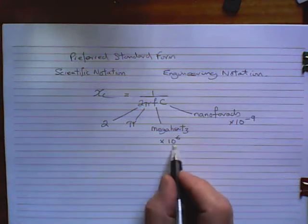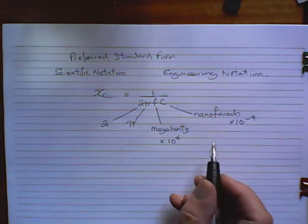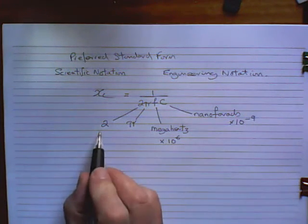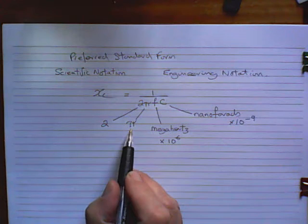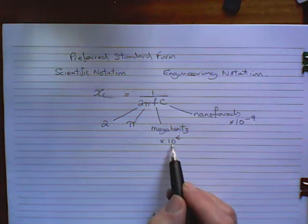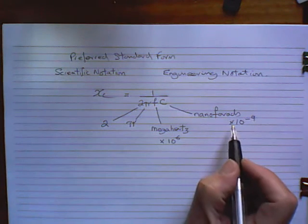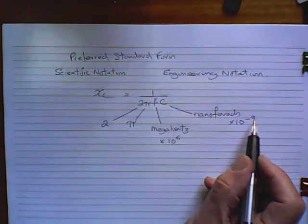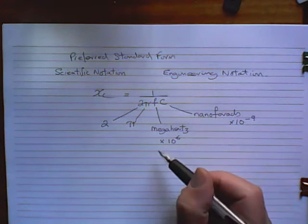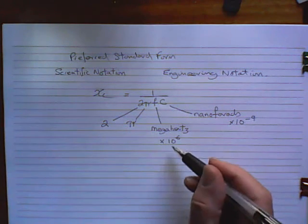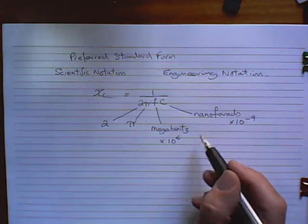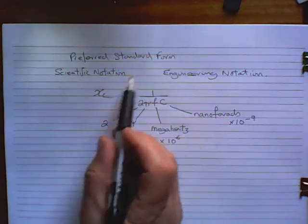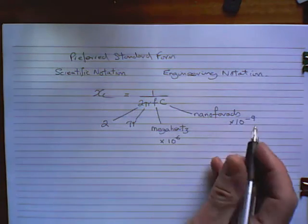Now, we are dealing here with a very, very big number — well, if you count millions as a big number — and we're dealing here with a very, very small number, multiplying these two numbers together. Multiplying by 2 is fine. Multiplying by pi is fine. But if you're multiplying by a million, and here we are multiplying by one thousandth of a millionth, there is vast room for error. Even with a calculator, it's liable to make mistakes. And therefore, why we need preferred standard form, whether it's scientific or engineering notation.